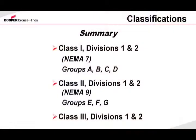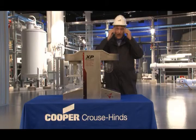In summary: Class 1, Division 1 and 2, Groups A, B, C, and D. Class 2, Division 1 and 2, Groups E, F, and G. And then finally flyings and fibers for Class 3.